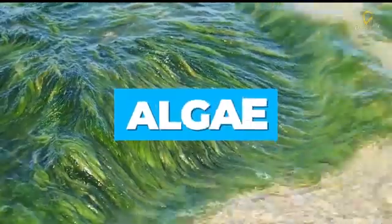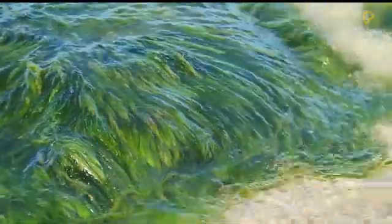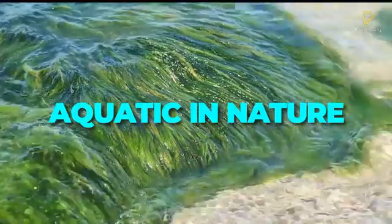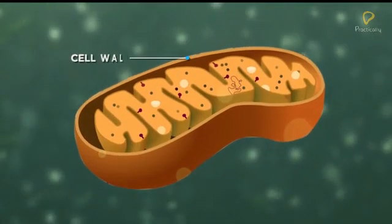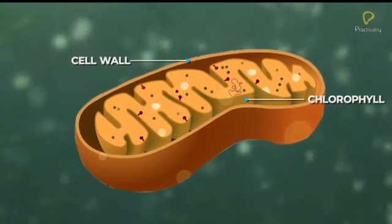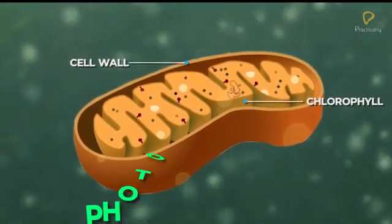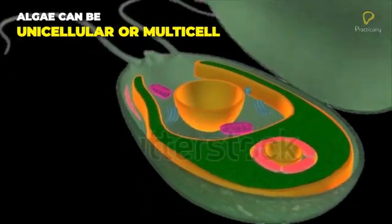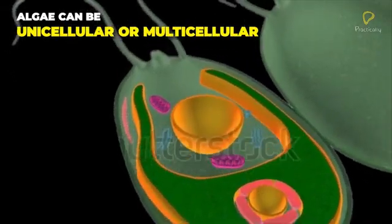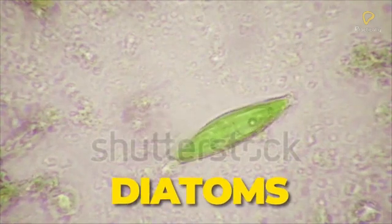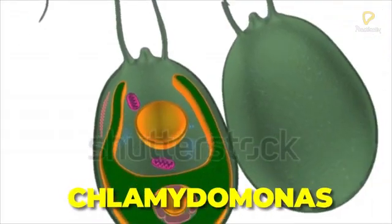Algae are simple, plant-like organisms which are usually aquatic in nature. They contain a cell wall and chlorophyll, and can make their own food by photosynthesis. Algae can be unicellular or multicellular. Some common examples are diatoms, Chlamydomonas, and seaweed.